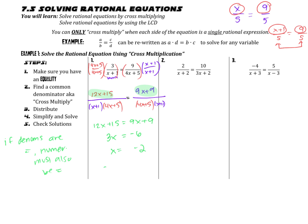Once you solve, you need to check that this is not an extraneous solution. What were we not allowed to plug in? We're not allowed to plug in negative 1 — that would make the denominator 0. We're not allowed to plug in negative 5/4 — that would also make a denominator 0. So negative 2 is an acceptable final answer. If I plug negative 2 in, I get 3 over negative 1. On the other side, I get 9 over (negative 8 + 5), which is negative 3. And this is, in fact, a true statement.